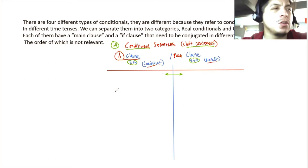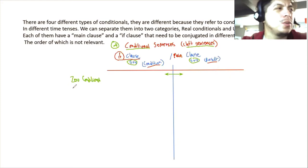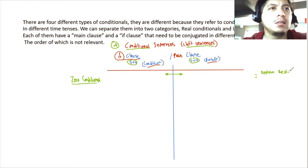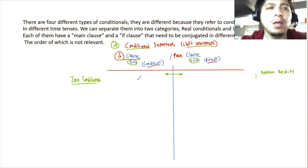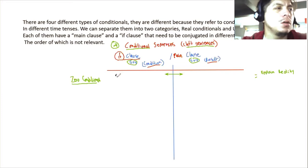The zero conditional is used to explain reality — how things are. When you use it, you are saying things are always like this. To use the zero conditional you need the present — not necessarily the simple present, just present: simple present, present continuous, present perfect, or modal verbs that work like present.